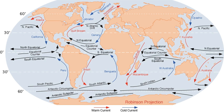An ocean current is a continuous, directed movement of sea water generated by a number of forces acting upon the water, including wind, the Coriolis effect, breaking waves, and temperature and salinity differences.